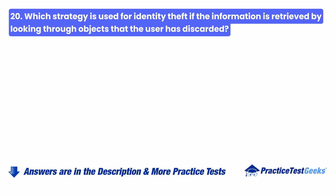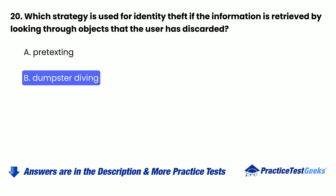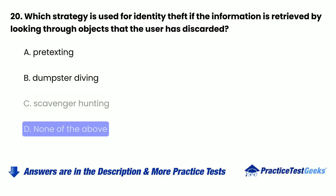Question 20: Which strategy is used for identity theft if the information is retrieved by looking through objects that the user has discarded? a. Pre-texting. b. Dumpster Diving. c. Scavenger Hunting. d. None of the above.